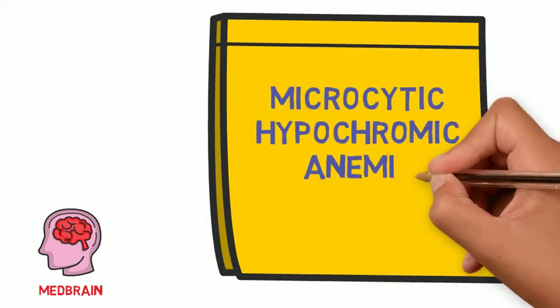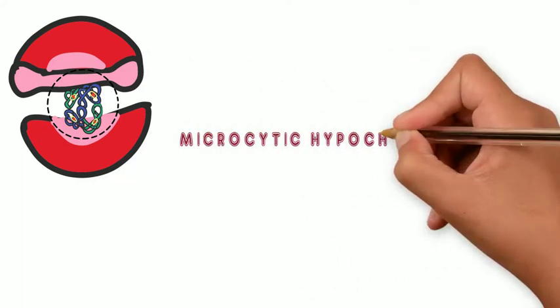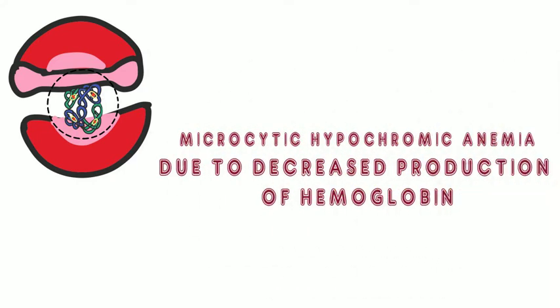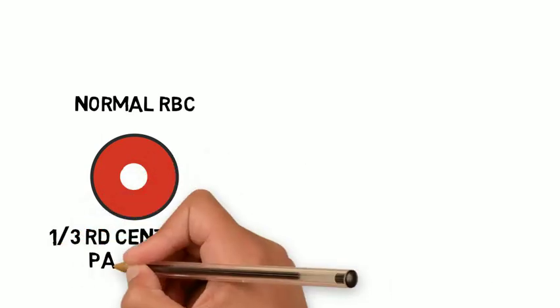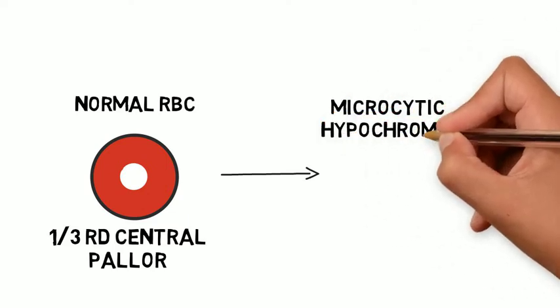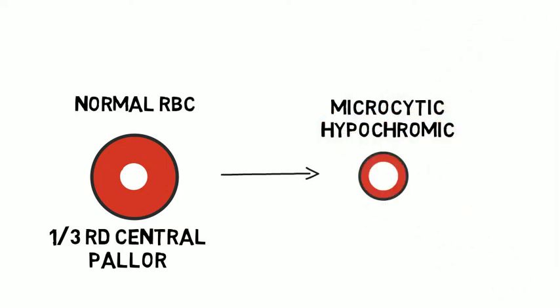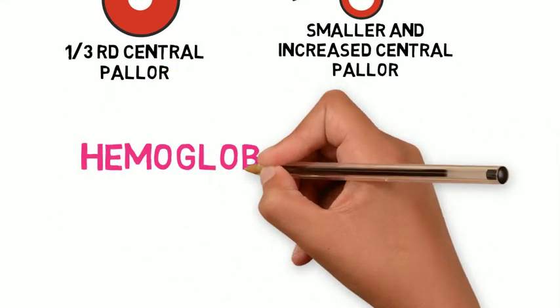Microcytic hypochromic anemia is due to decreased production of hemoglobin. In a normal RBC there is central pallor; when hemoglobin is decreased, the RBC becomes microcytic and hypochromic — smaller in size and with increased central pallor.